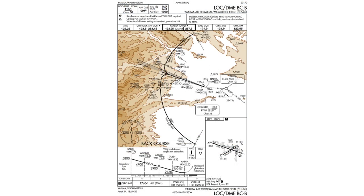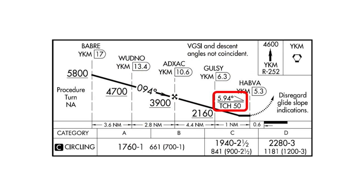Now let's move on to approaches. When you fly procedures with unusual elements, annotations reduce workload and confusion during critical phases of flight. This approach at Yakima, Washington is challenging for a couple of reasons. First, it's a back course. Second, it requires a descent angle of 5.9 degrees — twice the typical gradient. That information is easy to overlook in the busy profile view.